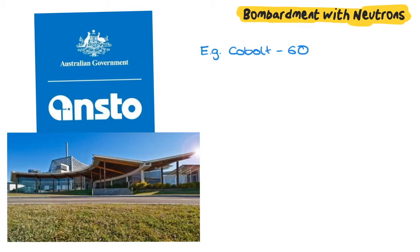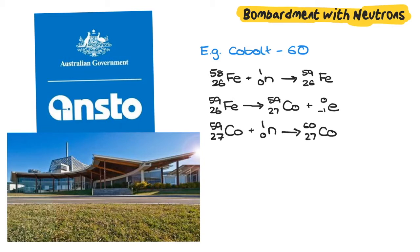For example, cobalt-60, which is an important medical radioisotope, which is produced in three steps. This begins with the bombardment of iron-58 with neutrons to form iron-59, followed by the emission of a particle to form cobalt-59. This then absorbs the neutron to form cobalt-60.